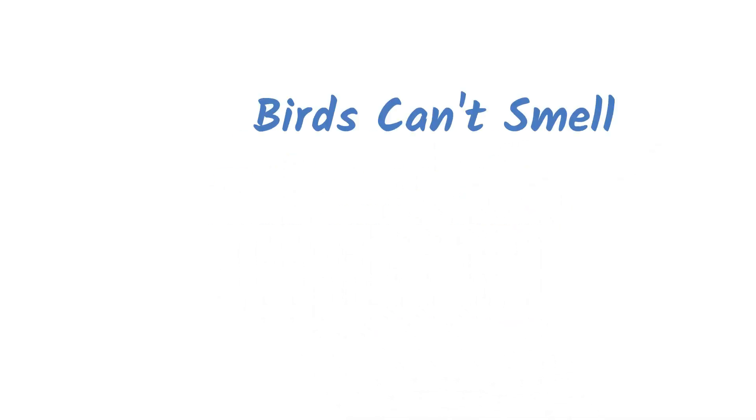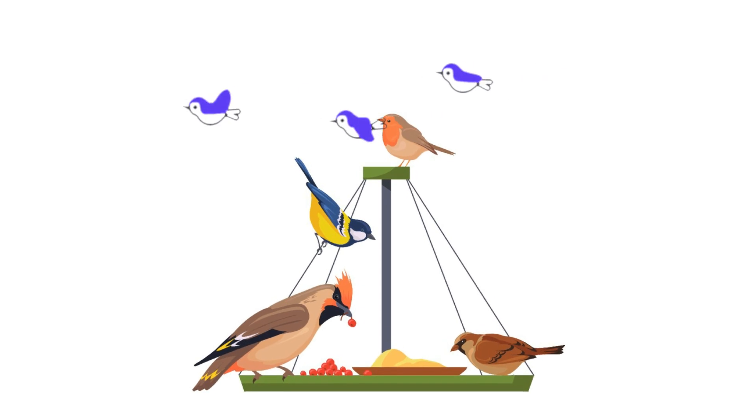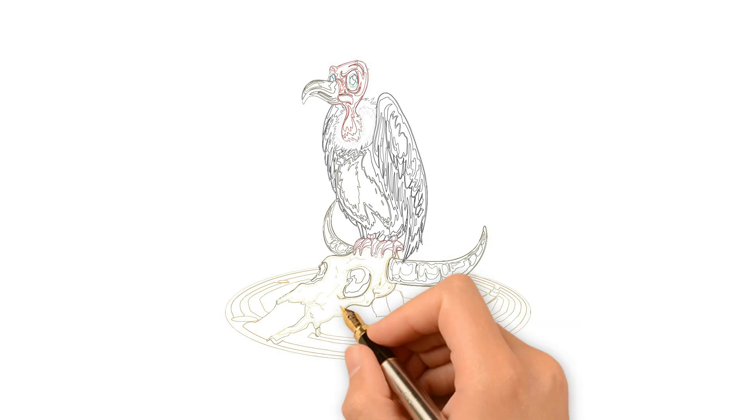Birds can't smell. While not as strong as their vision, birds do have a sense of smell, which helps them find food and mates. Vultures, for example, rely heavily on smell to locate carrion.